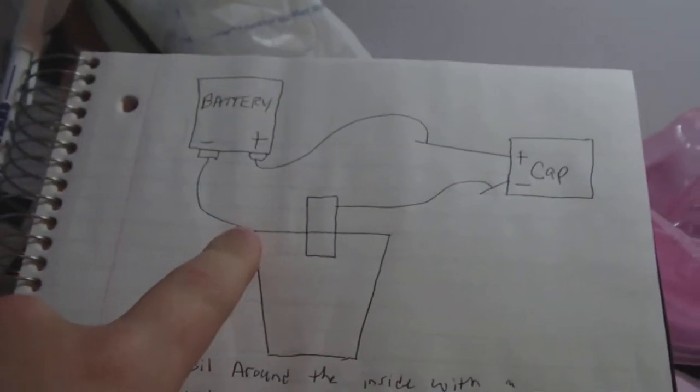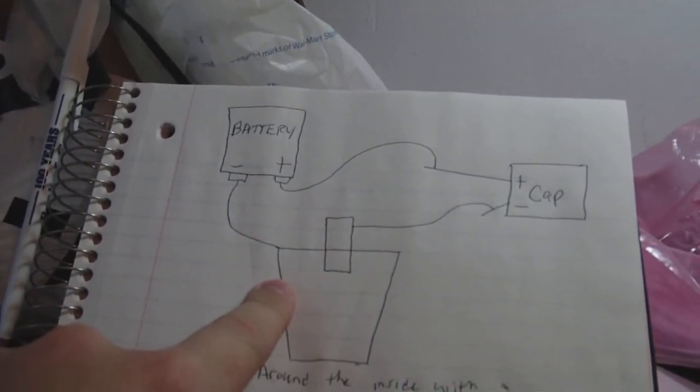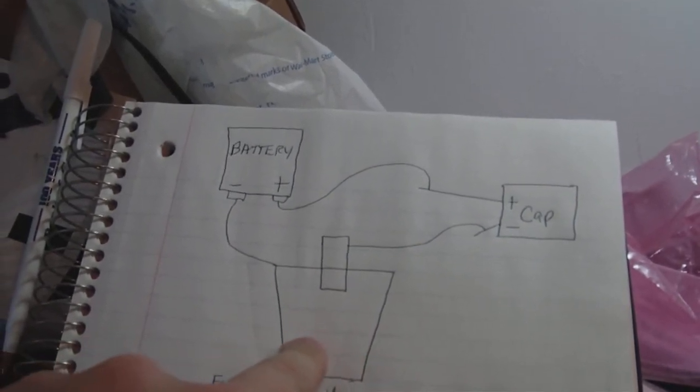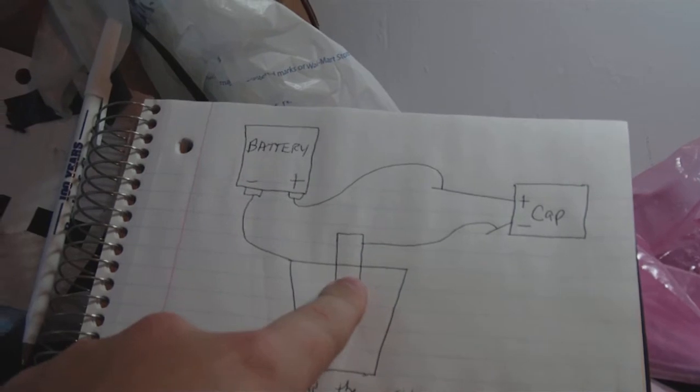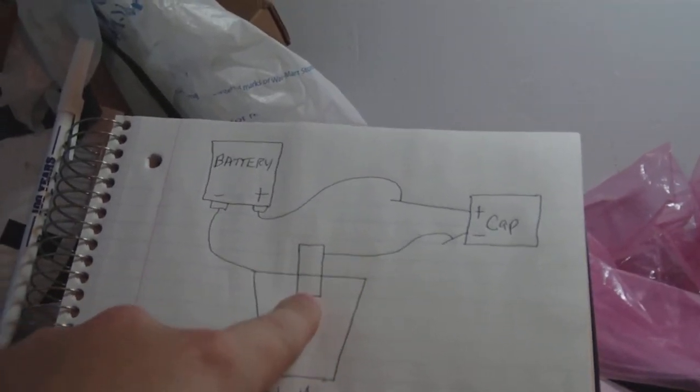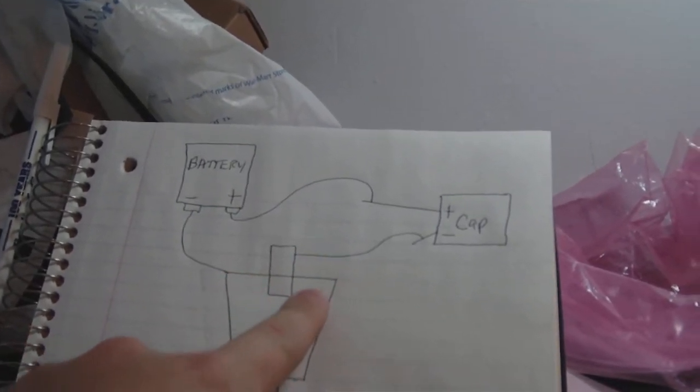The negative of the battery goes to the aluminum foil that is wrapped around the inside of the cup, completely wrapped around the inside. There's a quarter inch piece of aluminum foil right there. It goes inside the water and this cup is filled with water.